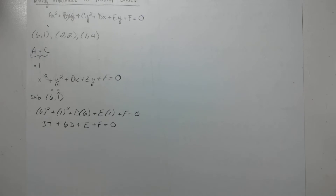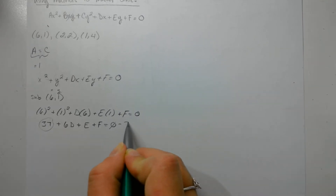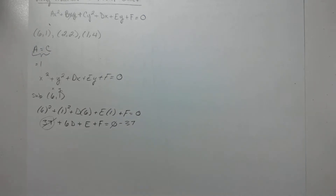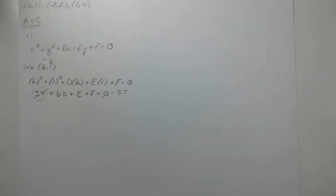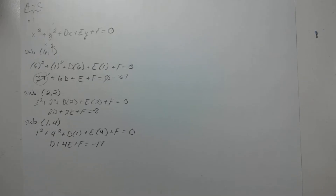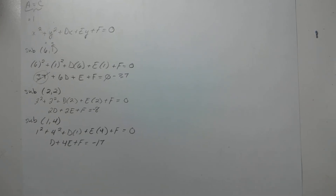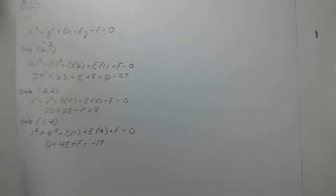Now you're going to move all your constants to one side, similar to how you did when completing a square. Our constant here is 37, and that gives us negative 37 on the other side. I'm going to go ahead and do that for all my remaining coordinates — I'll show you the end result because you're literally just substituting in every step. So I've completed all my substitution. Your next step is switching it into matrix format.